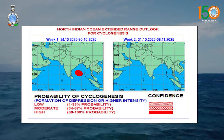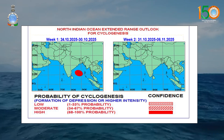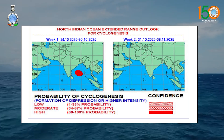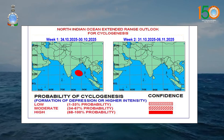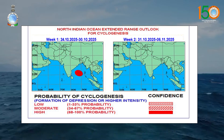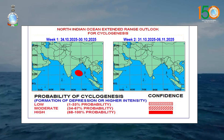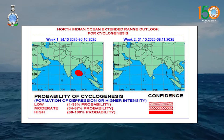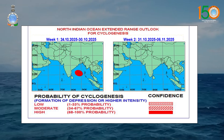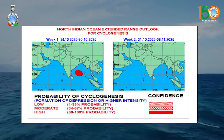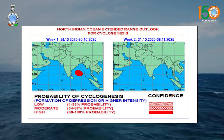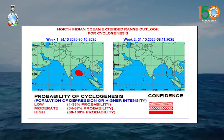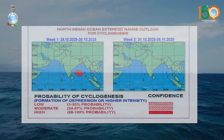Looking into the cyclogenesis forecast for the next two weeks, most of the models are indicating the movement of the depression over Southeast Arabian Sea and adjoining Central Arabian Sea during week 1. Models are also suggesting a low pressure area over parts of Southeast and adjoining East Central Bay of Bengal around 24th October, with indication of west-northwestward movement and further intensification of the low pressure area in the first half of the week.